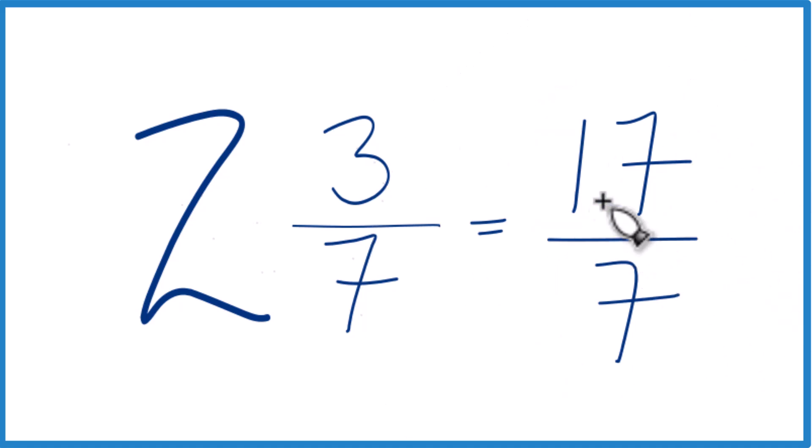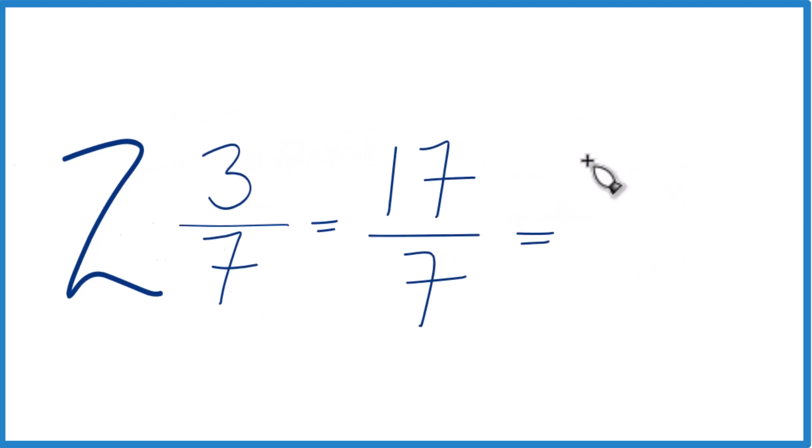Let's go back the other way. We could take and change this improper fraction back to a mixed number. 7 goes into 17 twice, because 2 times 7 is 14. We have 3 left over, and let's bring the 7 across.